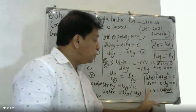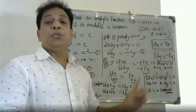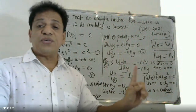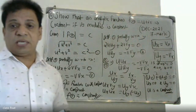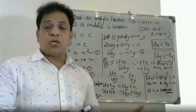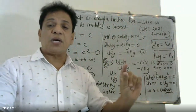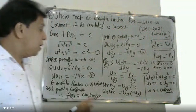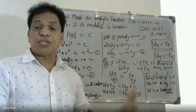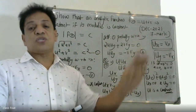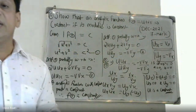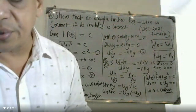Therefore, an analytic function with a constant real part is a constant. This proves that if the modulus of an analytic function is constant, the function itself is constant.